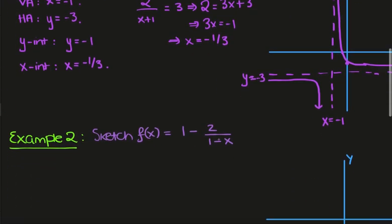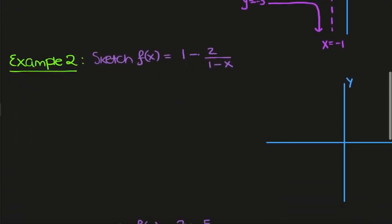Let's look at another example. Here we have f of x is equal to 1 minus 2 over 1 minus x. The vertical asymptote is given by setting the denominator equal to 0, so x equals 1. The horizontal asymptote is given by the d factor, so y equals 1. Finding the y intercept by setting x equal to 0, we get 1 minus 2, which gives minus 1.